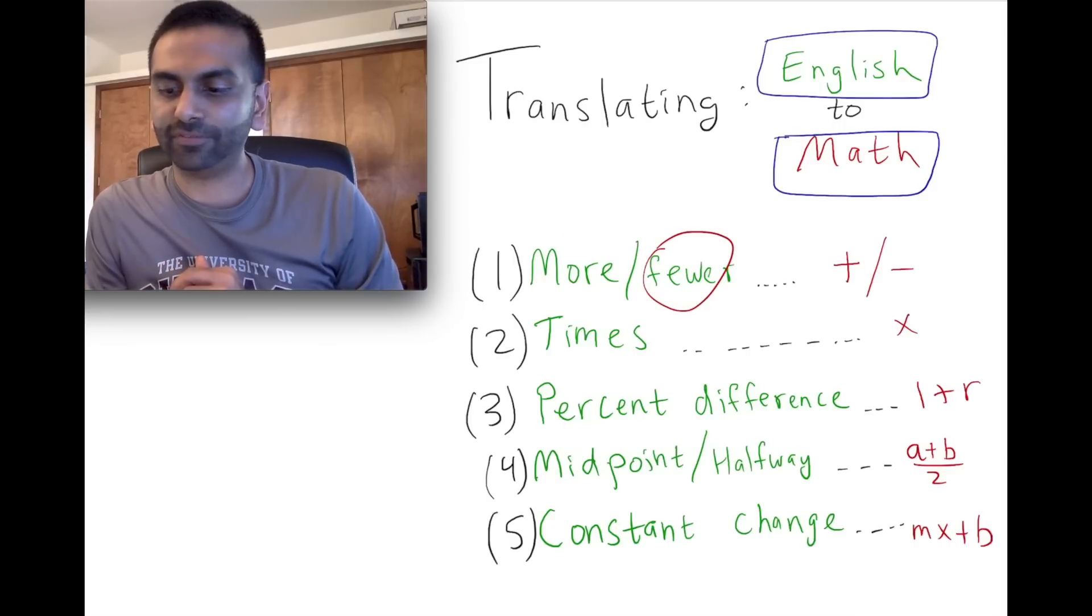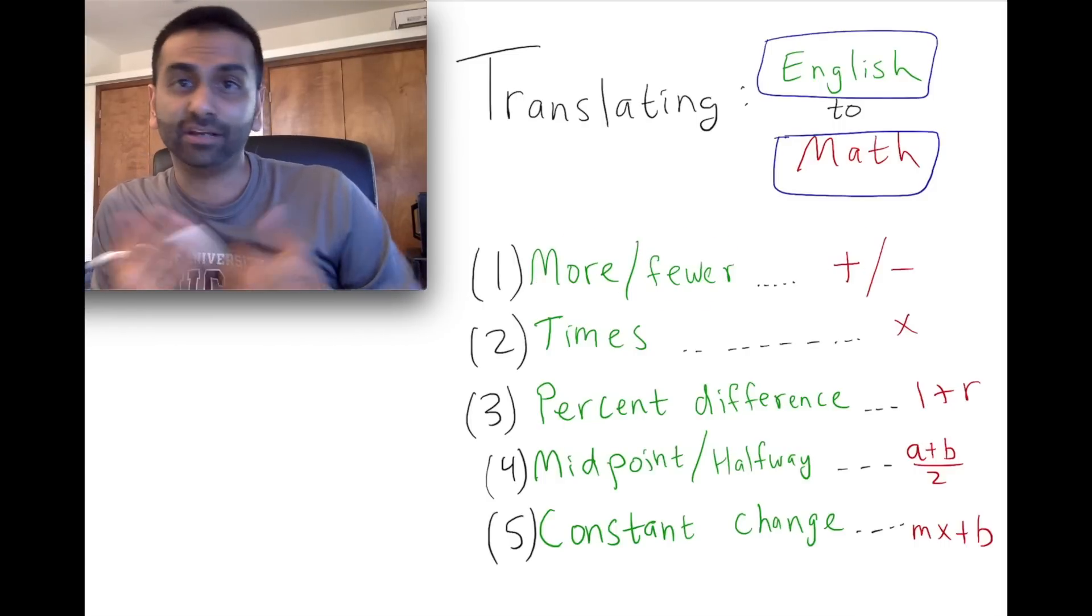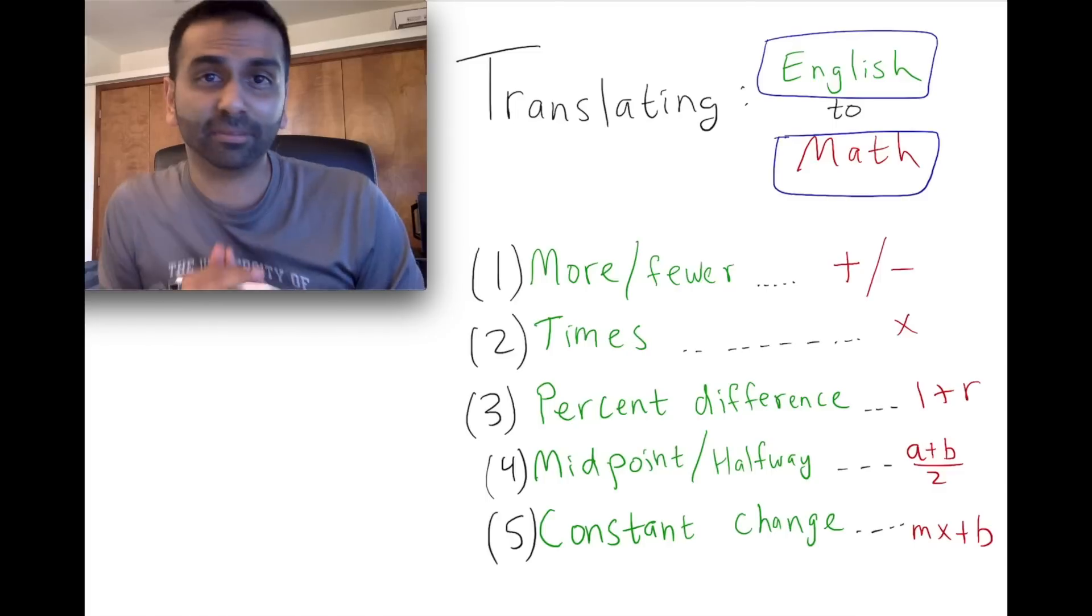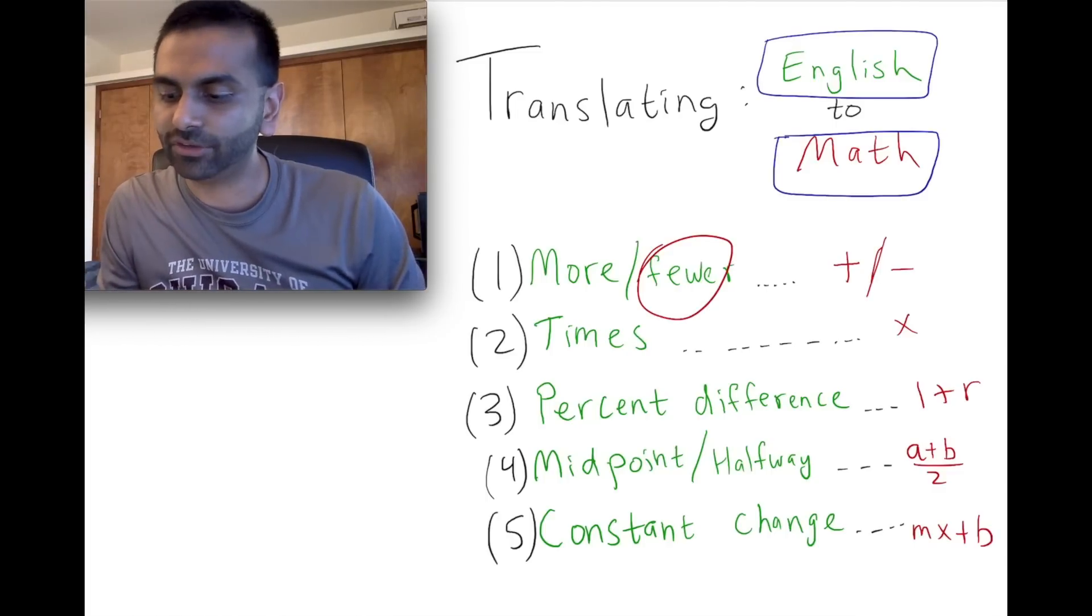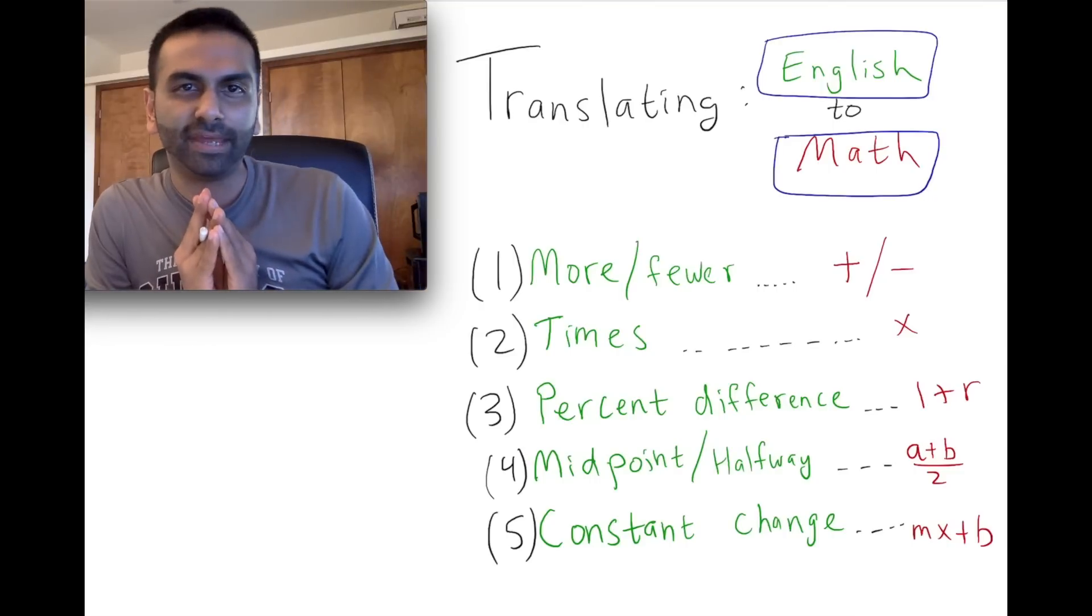Similarly, 'fewer'—if you want to say somebody has three fewer cards than somebody else, you would say that's something minus three. So again, 'fewer' translates to minus.